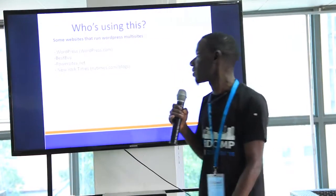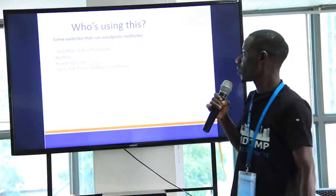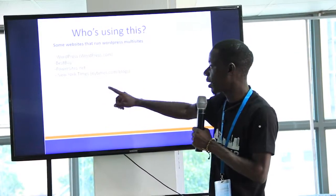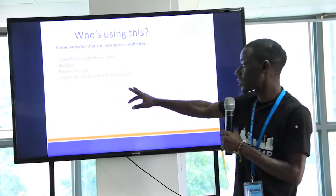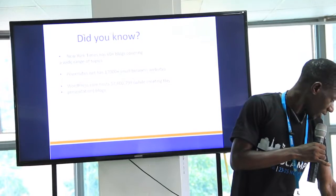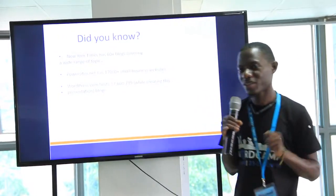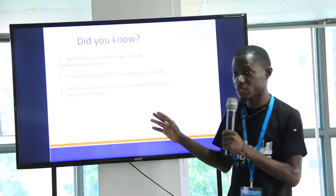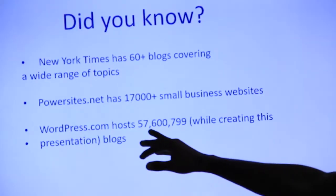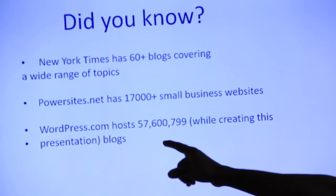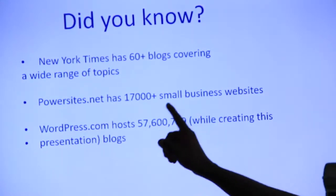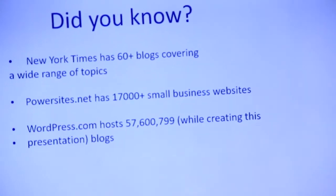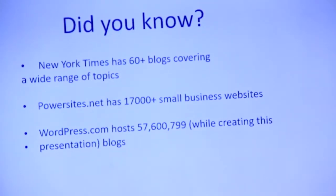So who's using multi-sites? Well, some websites use WordPress multi-site — check them out: Bestbuy.com, WordPress.com, PowerSites.net, New York Times slash blogs. The New York Times has 60-plus blogs covering a wide range of topics. I got these stats about two weeks back, so the number is around 57. This has been the theoretic part of multi-site — just a few minutes — and now we can go through the practicals.